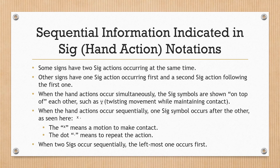Sequential information indicated in SIG hand action notations. Some signs have two SIG actions occurring at the same time; others have one SIG action occurring first and a second following. When hand actions occur simultaneously, the SIG symbols are shown on top of each other, such as a twisting movement while maintaining contact. When hand actions occur sequentially, one SIG symbol occurs after the other. The X means a motion to make contact; the dot means to repeat the action. When two SIGs occur sequentially, the leftmost one occurs first.